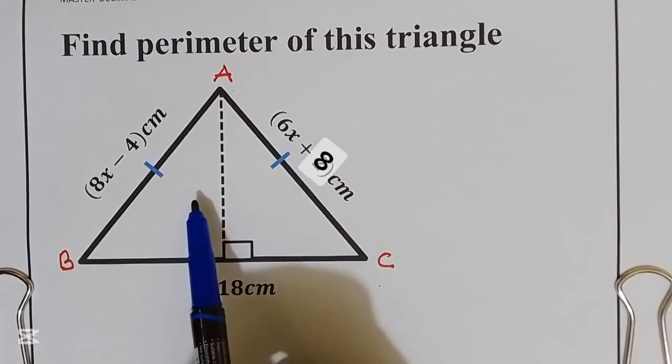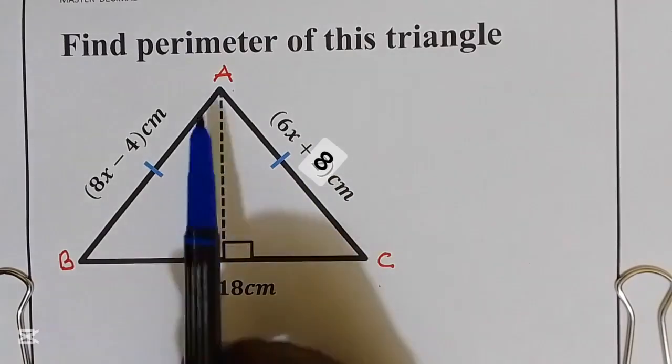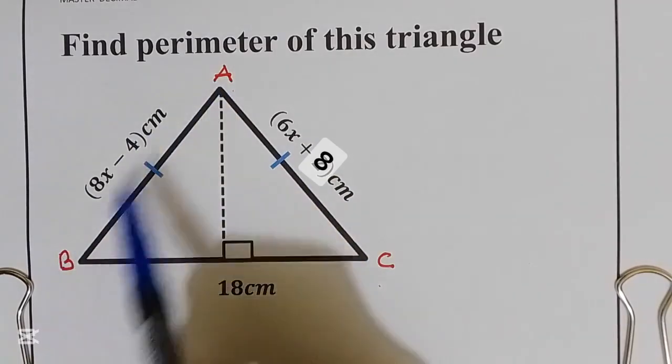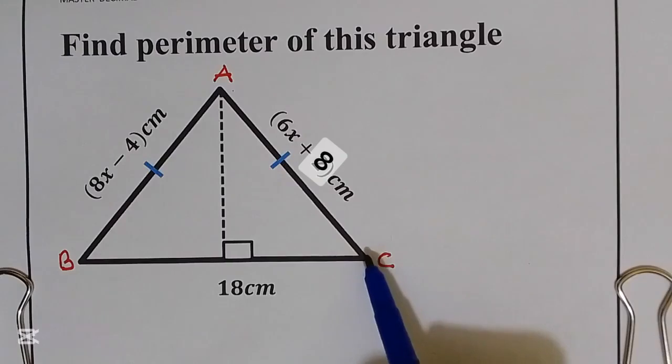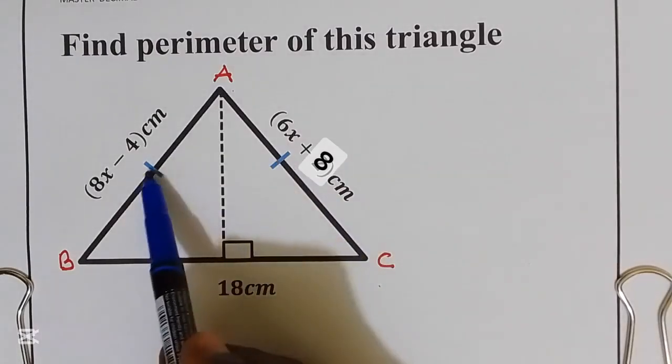How can we get the value of X? That is a good question. We know that distance AB is equal to distance AC since this is an isosceles triangle and they have given to us the sign.